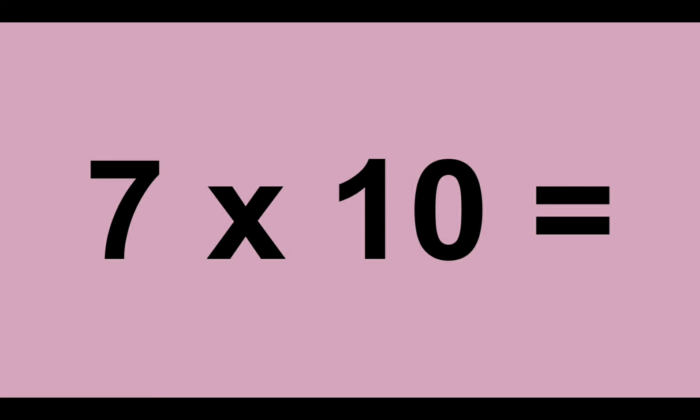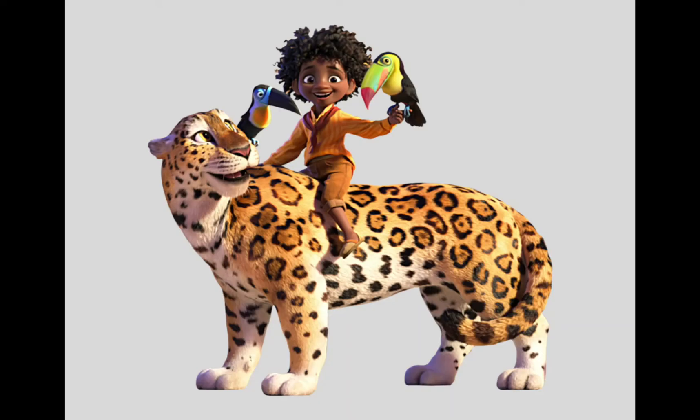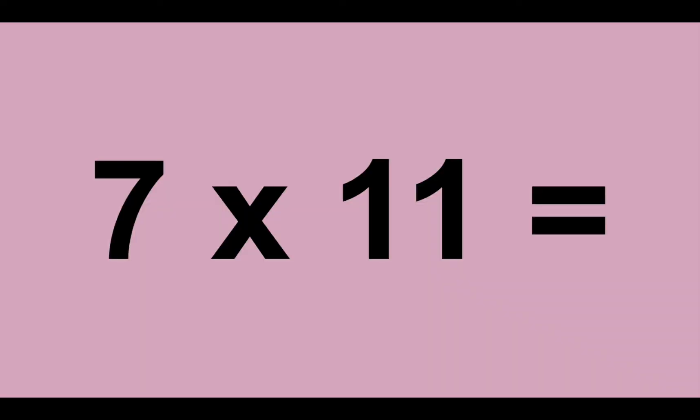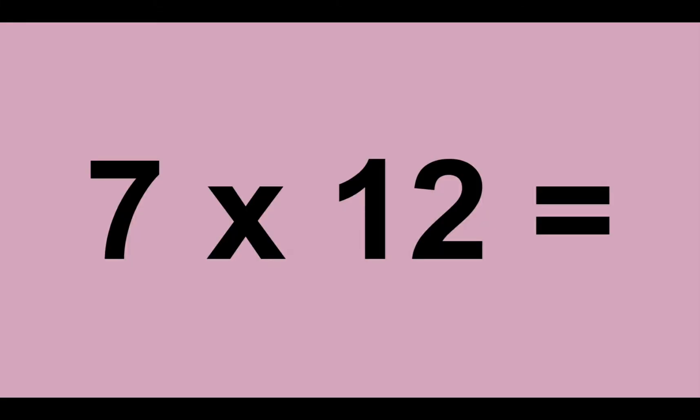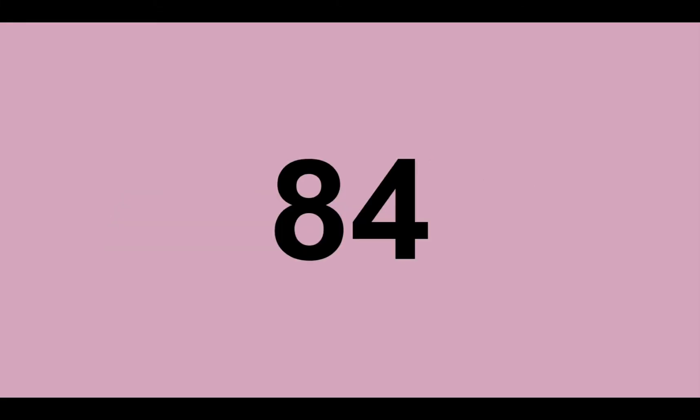7 times 10 equals 70. 7 times 11 equals 77. 7 times 12 equals 84.